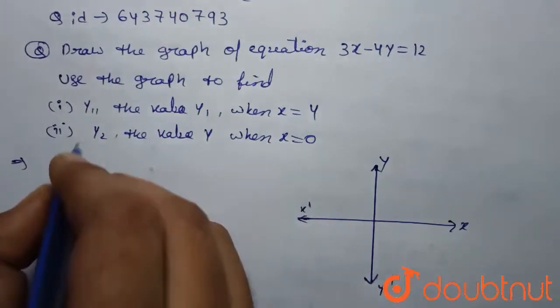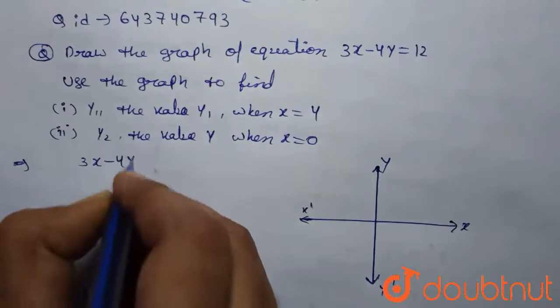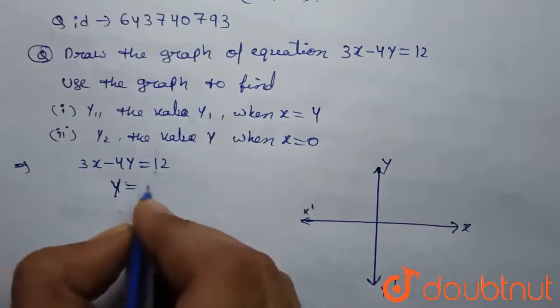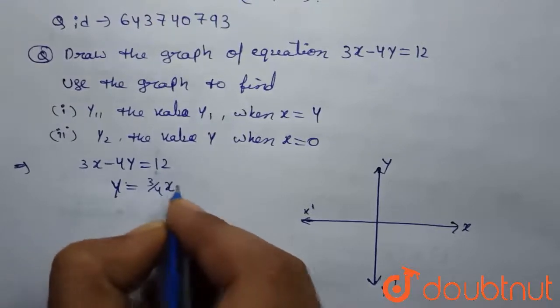For this, you need to consider the given equation 3x minus 4y is equal to 12. And for y, y will be 3 by 4 x minus 3.